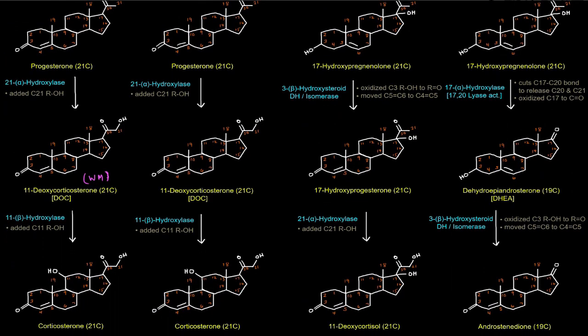Then 11β-hydroxylase adds a hydroxyl group at the 11 position to give corticosterone. So 11-deoxycorticosterone is just corticosterone without the hydroxyl group at the 11 position. Corticosterone is also a mineralocorticoid, though again it's a weak one.